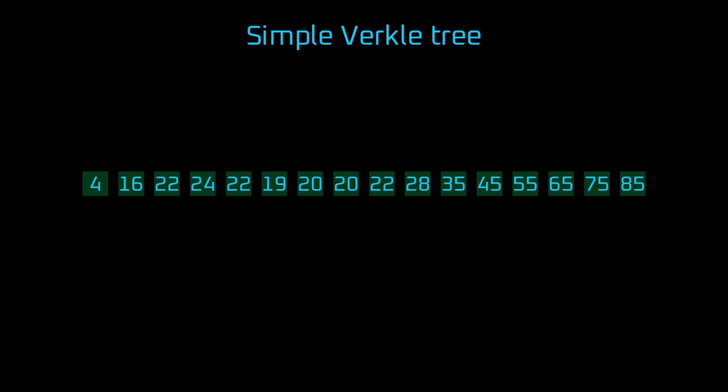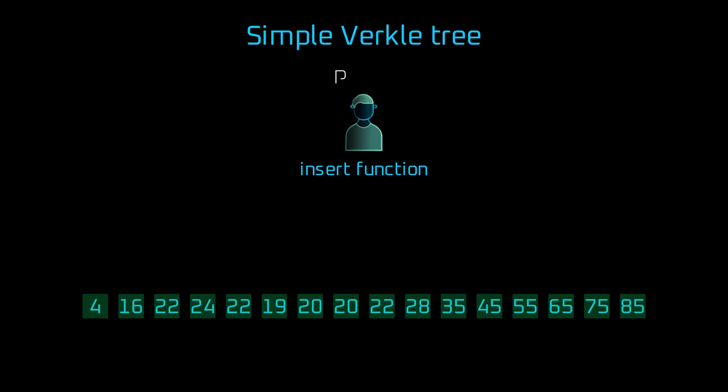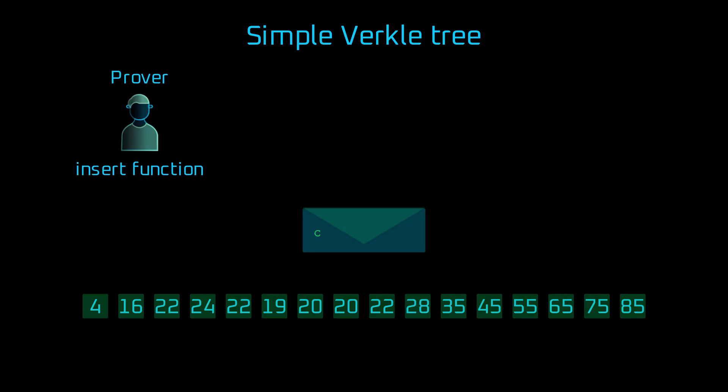And now, finally, let's get into the structure of verkle trees. To build a simple verkle tree, we start with a vector. For starters, say it has 16 elements. The function that updates the tree, for example, an insert function, which creates the verkle tree, acts as a prover in the commitment scheme. A prover is in charge of modifying the dataset and creates a commitment which acts like a parent node.